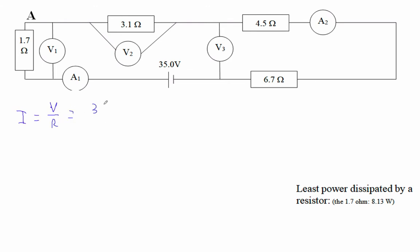So it's 35 volts divided by, let's keep going, let's go around 1.7. Remember, ammeters have zero resistance. But we've got 1.7 plus 3.1 plus 4.5 plus 6.7. And what is that?